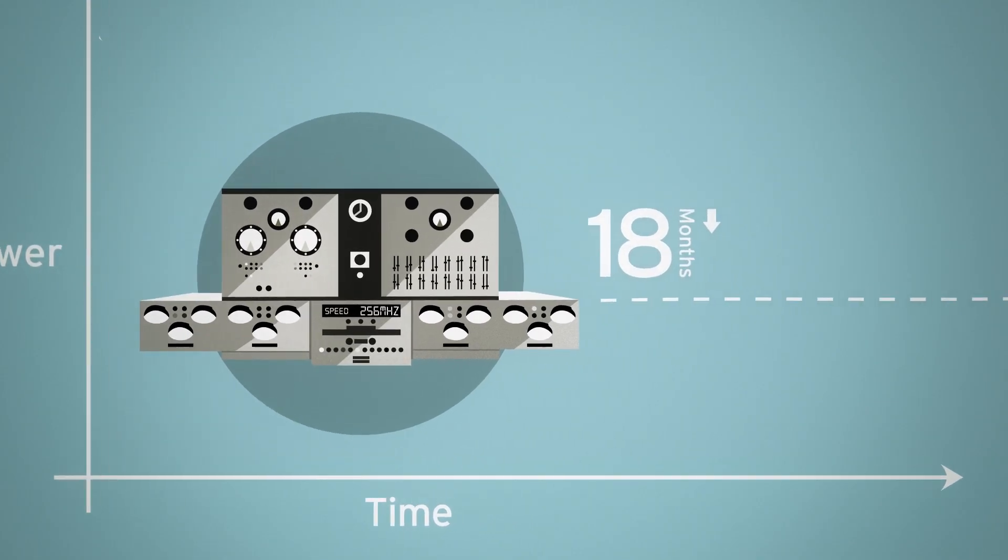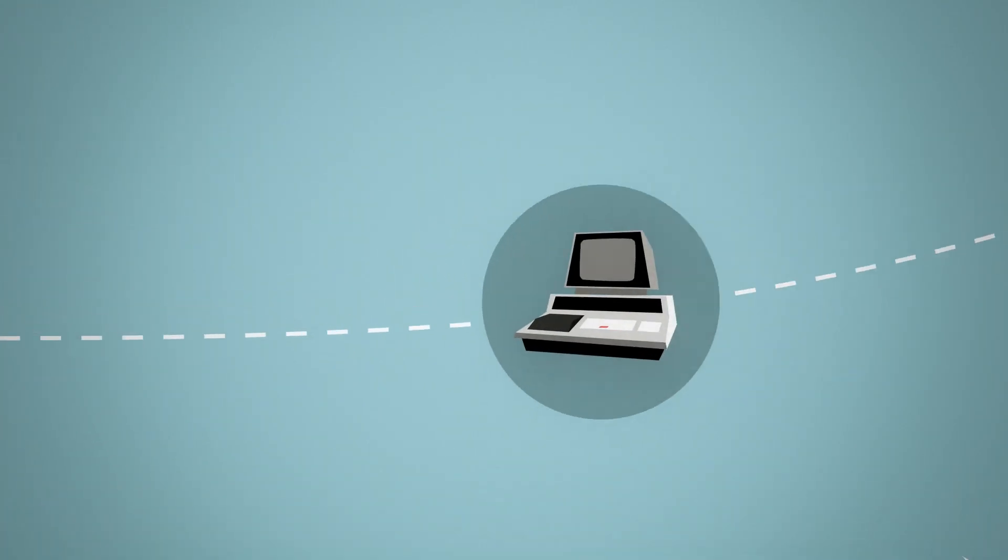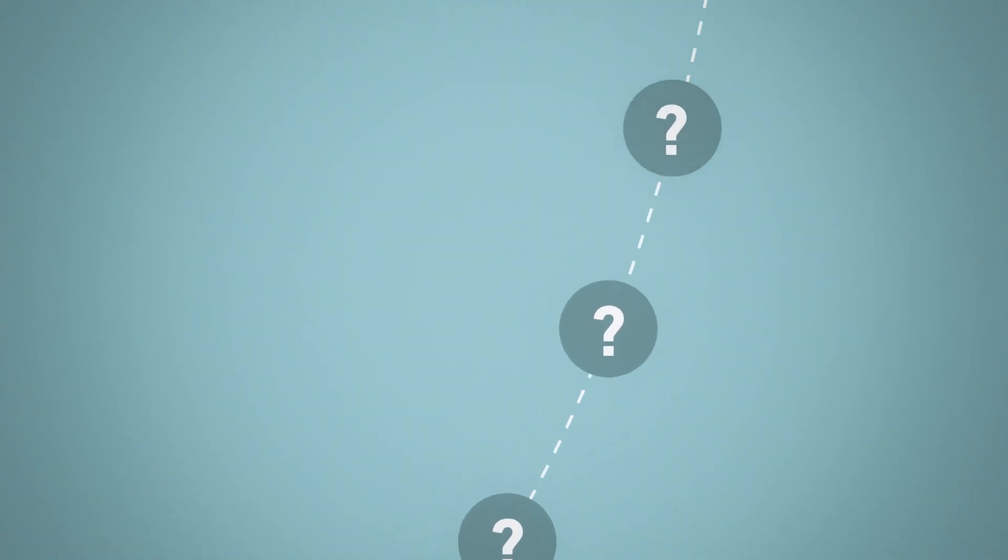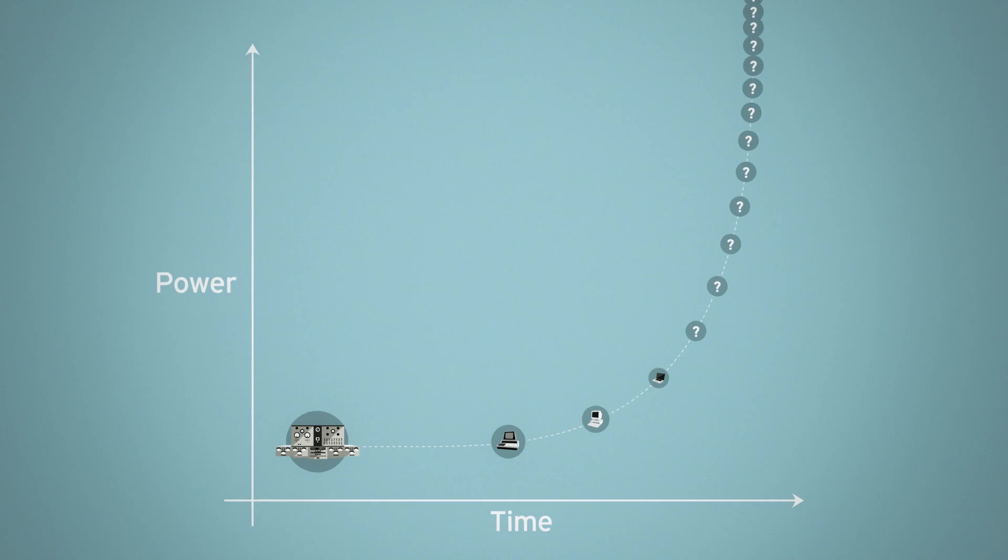Plot this on a graph and it's not a straight line, but an exponential upward curve. We need only project into the future to see that there is a point at which this line is practically vertical.